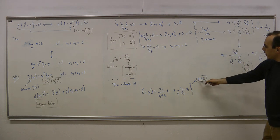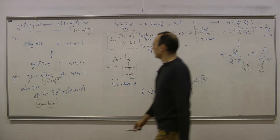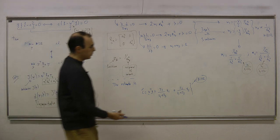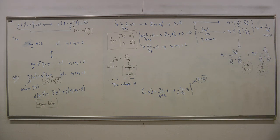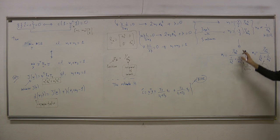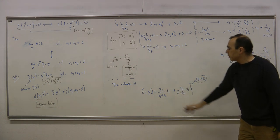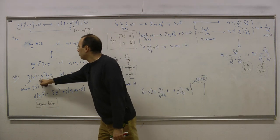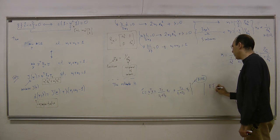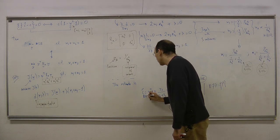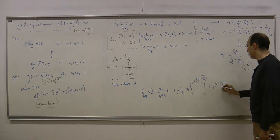The BLUE estimator is Ĉ_blue = W^T X = (τ1 X1 + τ2 X2)/(τ1 + τ2). This is a weighted average of observations with weights proportional to their precision — observations with lower noise variance carry more weight.